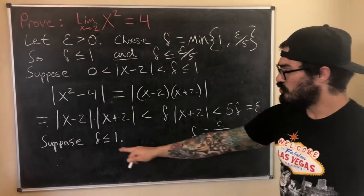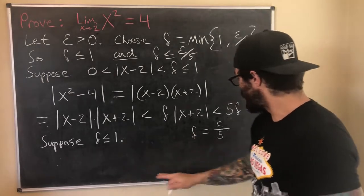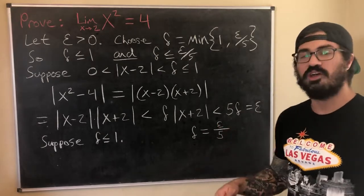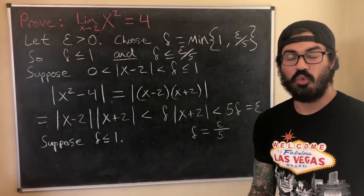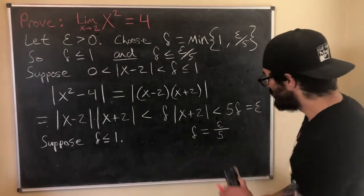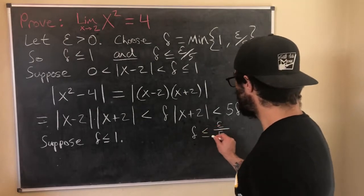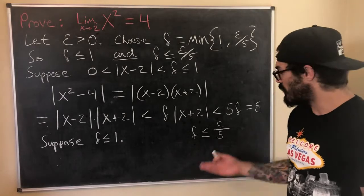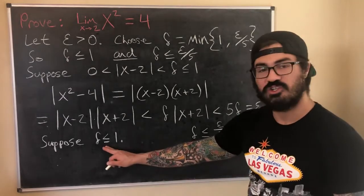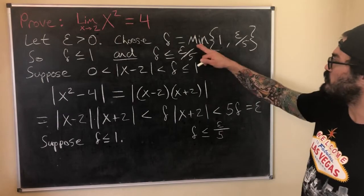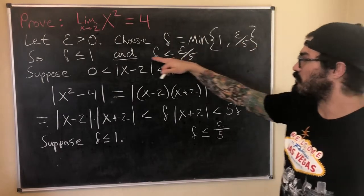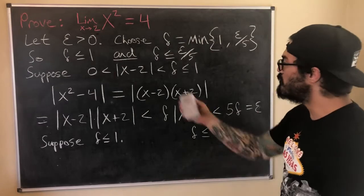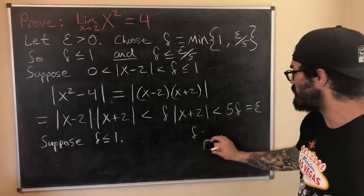Delta ≤ 1 and delta ≤ ε/5, and remember: if we have a suitable choice for delta, then any delta less than that will also work. So we can replace strict equality with ≤. We need both conditions to be true, which is exactly what choosing the minimum guarantees. We're going to need both of these assumptions to finish the proof. It's a pretty slick approach — a lot of people turn this into a proof by cases, but you don't have to if you use this fact.